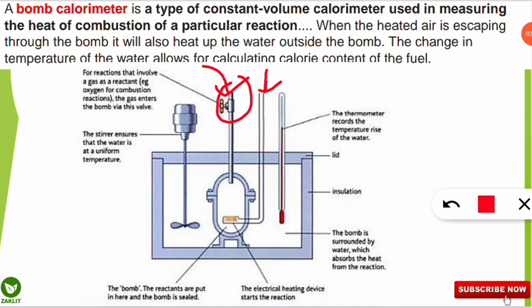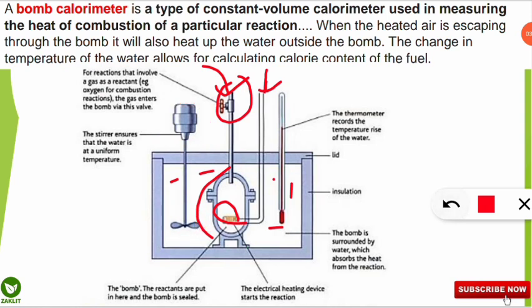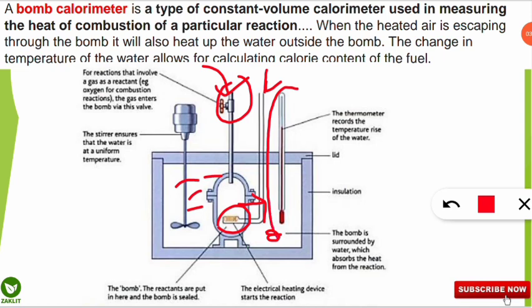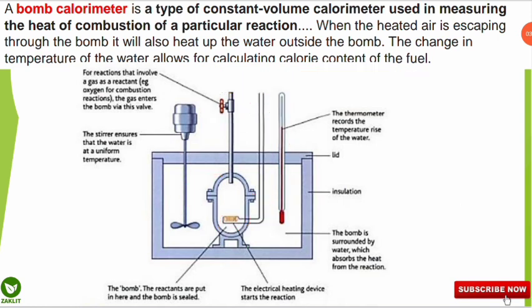The sample is placed inside the bomb shell, surrounded by water. A stirrer ensures the water is at a uniform temperature. An electrical heating device heats the sample, which then releases heat that escapes from the bomb and is distributed throughout the water, raising the water temperature. By measuring the water temperature change, we can determine how much heat was released by the sample, and as a result we can get the calorie content of any fuel. That is how the bomb calorimeter works.